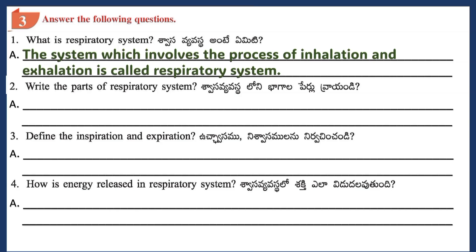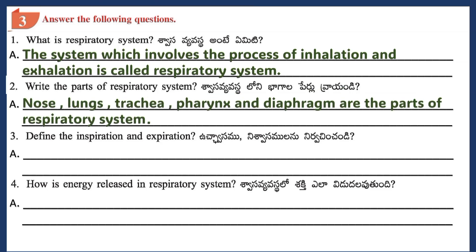Question 2: Write the parts of the respiratory system. Answer: Nose, lungs, trachea, pharynx and diaphragm are the parts of the respiratory system.